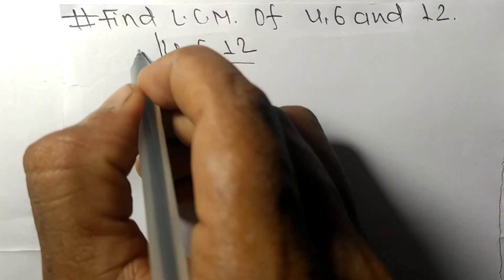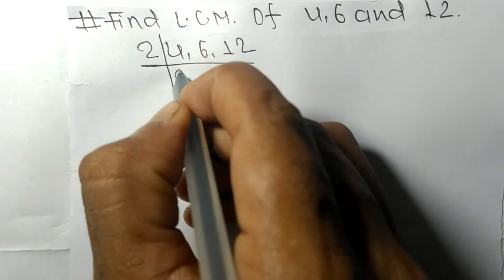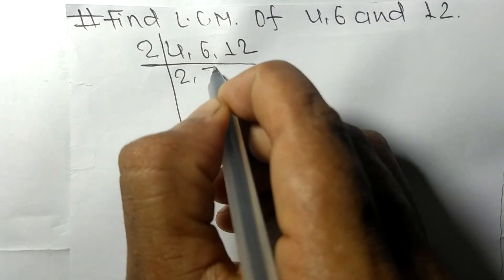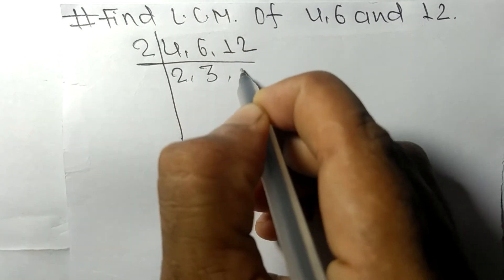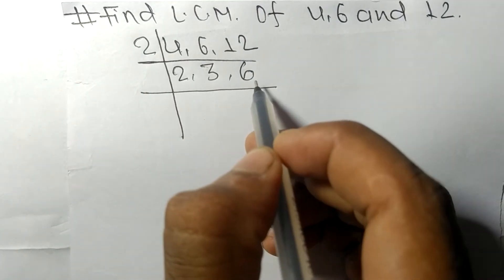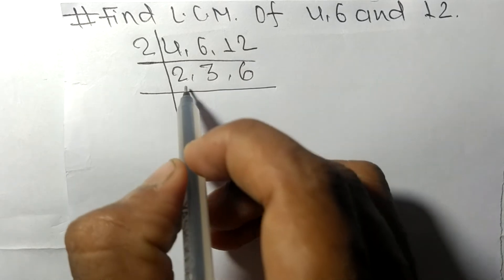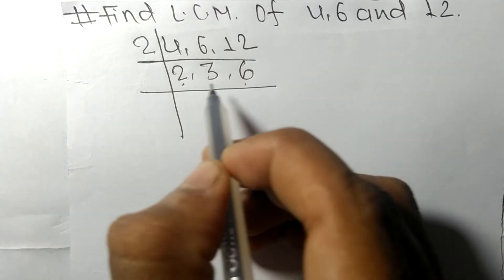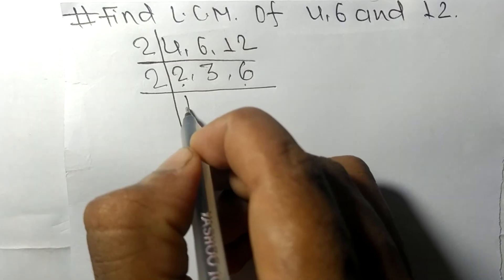These numbers are divisible by 2. 2 times 2 means 4, 2 times 3 means 6, 2 times 6 means 12. Now we got 2, 3, and 6, and among them 2 and 6 are divisible by 2.